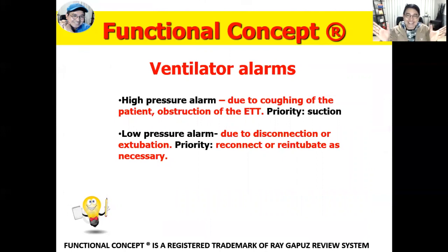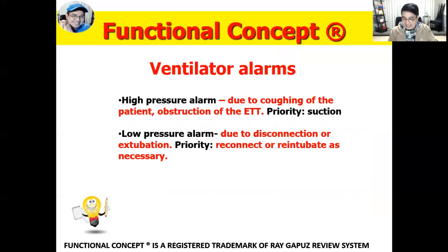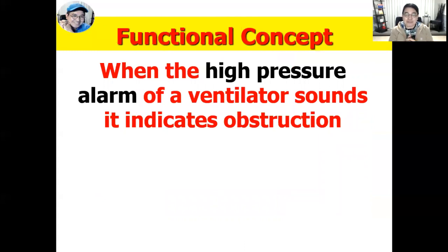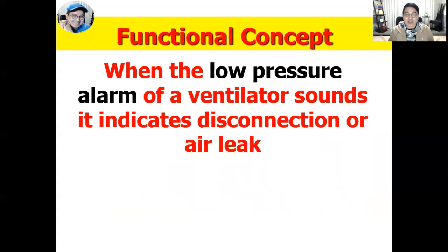For ventilator alarms: the high pressure alarm is due to coughing or obstruction of the endotracheal tube — the priority is to maintain a patent airway by suctioning the client. The low pressure alarm is due to disconnection or extubation — the priority is to reconnect or re-intubate the patient as necessary. When the high pressure alarm sounds, suction the client; when the low pressure alarm sounds, check for disconnection or extubation.